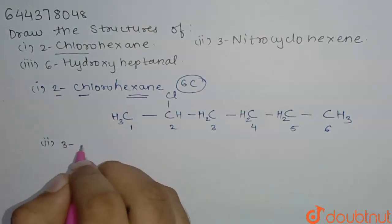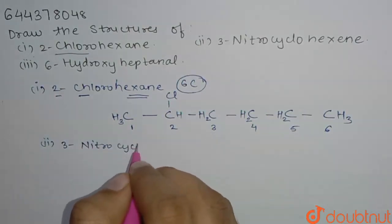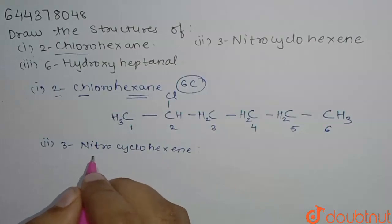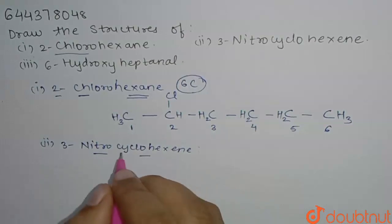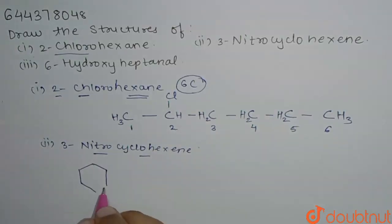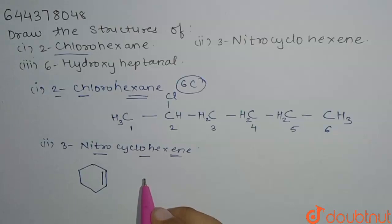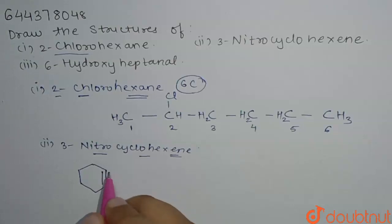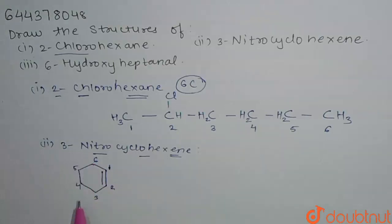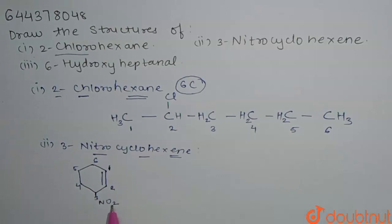Next is 3-nitrocyclohexane. So here it is. We have cyclohexane, and hexane means we have one double bond in the ring. It is said that at the third position we have a nitro group, so we will start numbering from the double-bonded carbon: 1, 2, 3, 4, 5, 6. At the third carbon we have the nitro group, so we will write NO2.